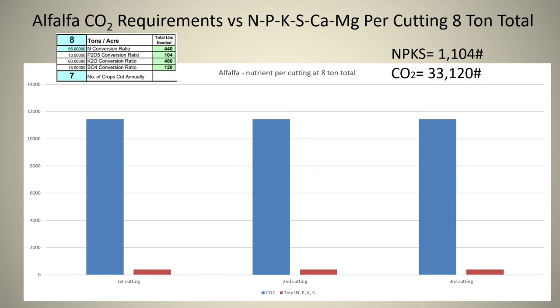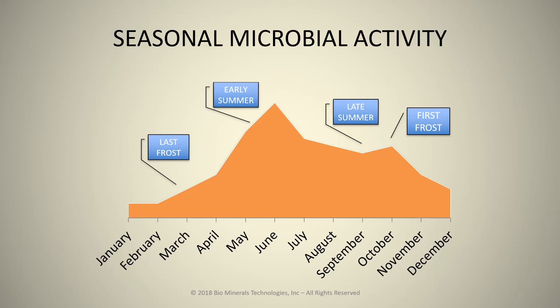Let's look at the alfalfa carbon dioxide requirement versus the NPK, calcium, sulfur, magnesium requirement to grow 8 tons of alfalfa. We need roughly 1,100 pounds of the NPK-type minerals, yet we need over 33,000 pounds of carbon dioxide. As you look at your natural microbial activity on a seasonal basis, you can see a very strong early summer and late summer, but in the fall it tends to taper down. And this is why you have a very good first cutting, typically a good second cutting, a smaller third, and a much smaller fourth — it's because our CO2 contribution is coming down because of our microbial activity.